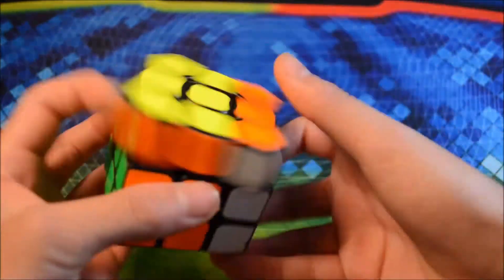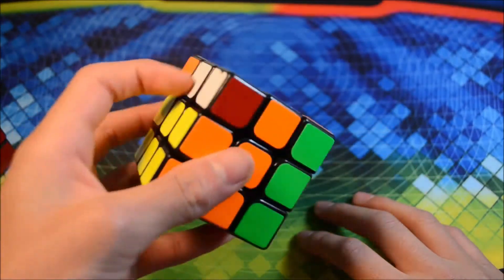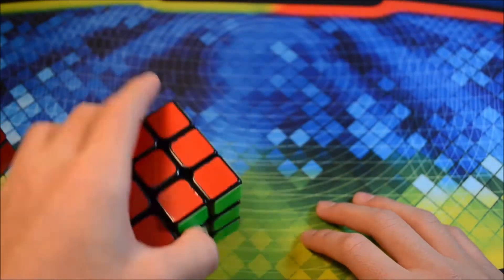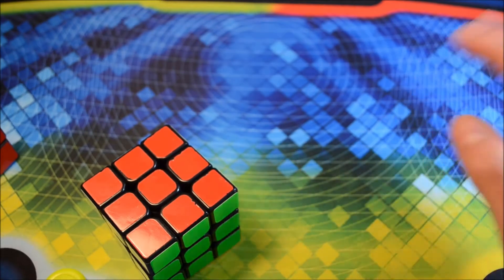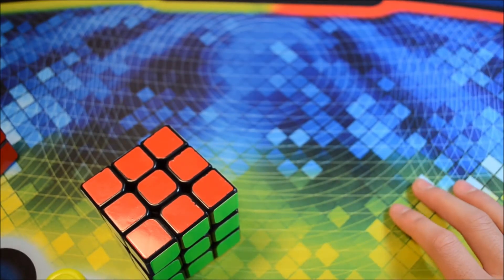And for one handed, I'll be using this mini owl long. I've used this for my last competitions. For one handed, I would just want another sub-30 average. That'd be really nice.